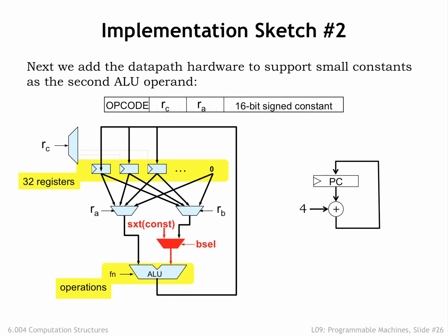To give some sense of the additional datapath hardware needed, let's update our implementation sketch to add support for constants as the second ALU operand. We don't have to add much hardware — just a multiplexer which selects either the RB register value or the sign-extended constant from the 16-bit field in the instruction. The BSEL control signal that controls the multiplexer is 1 for the ALU-with-constant instructions and 0 for the regular ALU instructions. We'll put the hardware implementation details aside for now and revisit them in a few lectures.